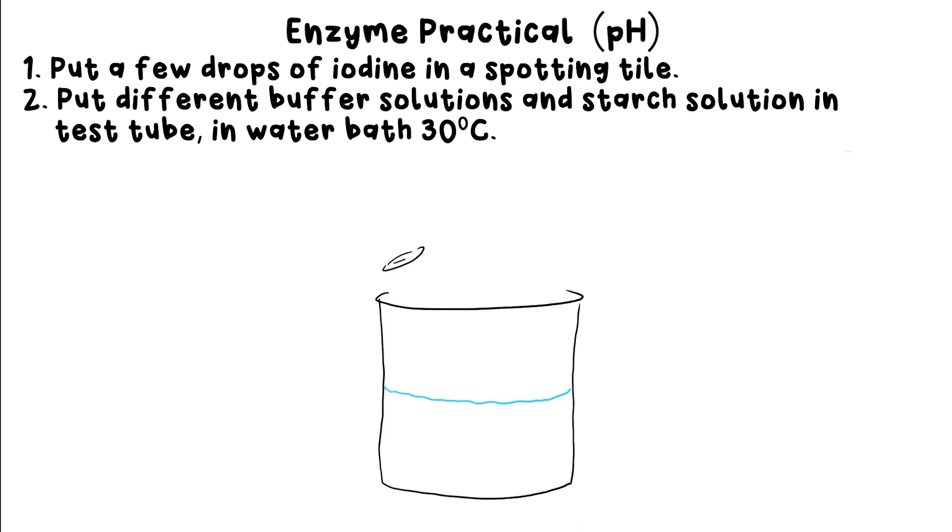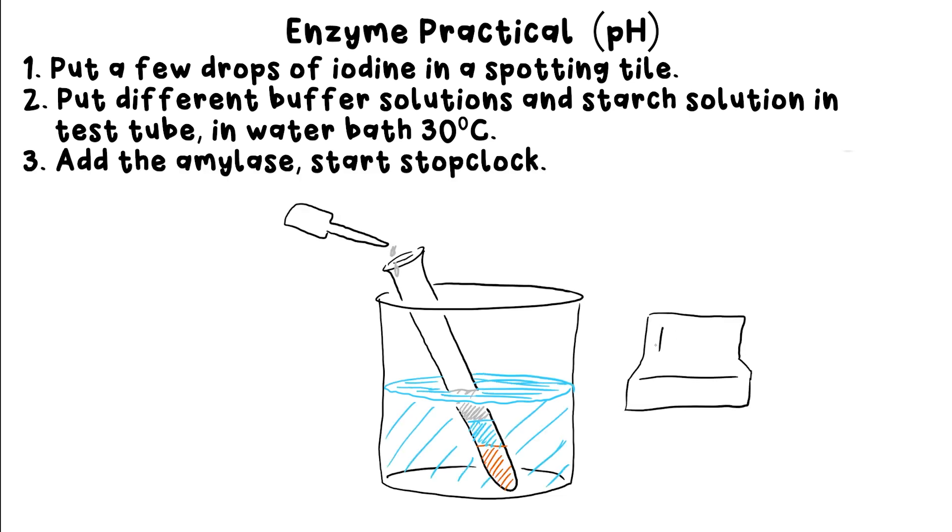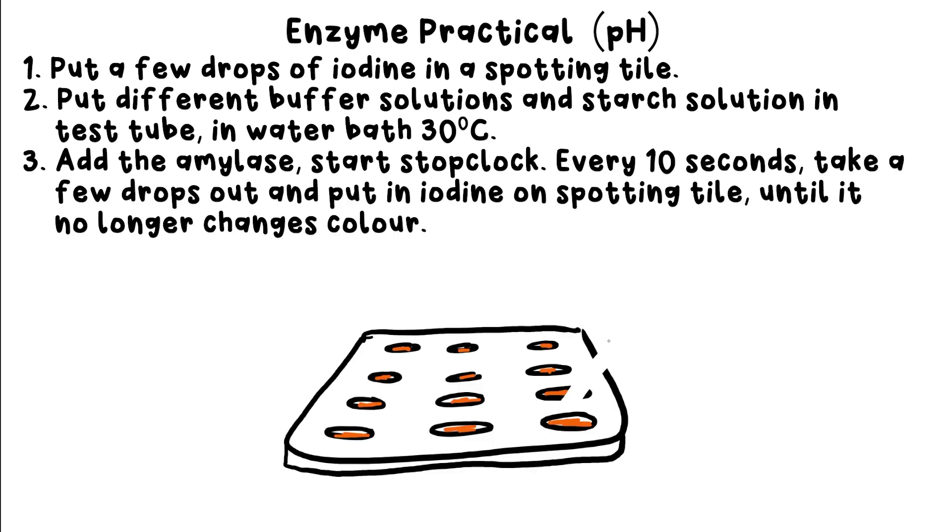Put your first test tube in a water bath and keep the temperature at 30 degrees Celsius. Step three: add the amylase and start your stopwatch at the same time.